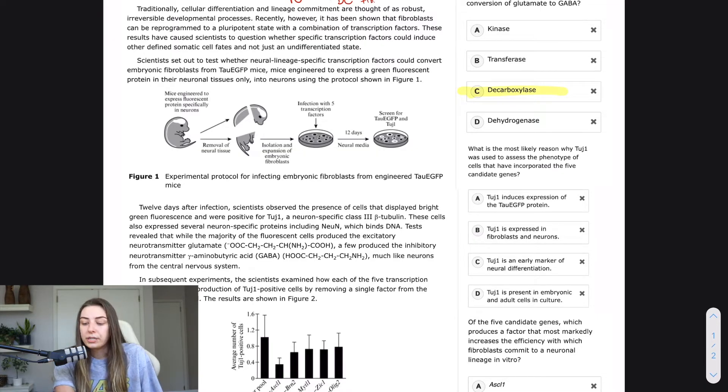C: TOOGE1 is an early marker of neural differentiation. So I don't know if it's an early marker, if it's a late marker, but I do know that it is specific to neurons. So I like that answer choice. It doesn't add any crazy stuff like B did, but it makes sense why they would use TOOGE1 to assess the phenotype of those.